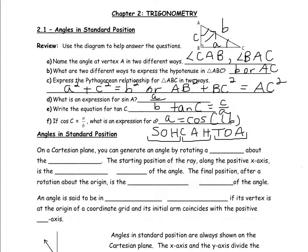I also have written down here SOH CAH TOA, the acronym we use to remember what sine, cosine, and tangent stand for. The letters go together in groups of three: SOH stands for sine is opposite over hypotenuse, CAH stands for cosine is adjacent over hypotenuse, and TOA stands for tangent is opposite over adjacent.